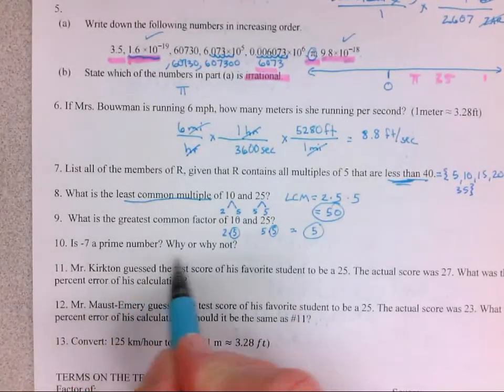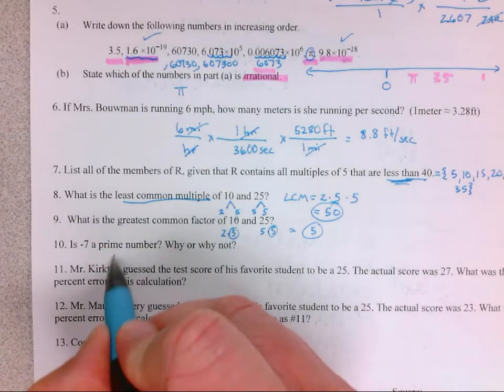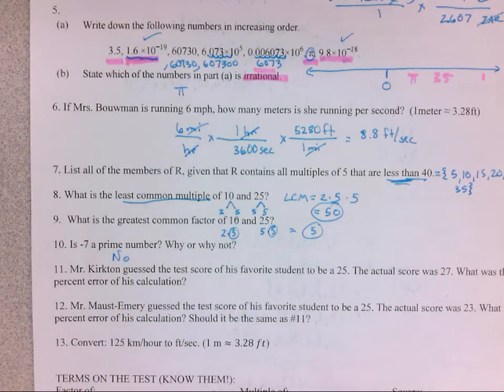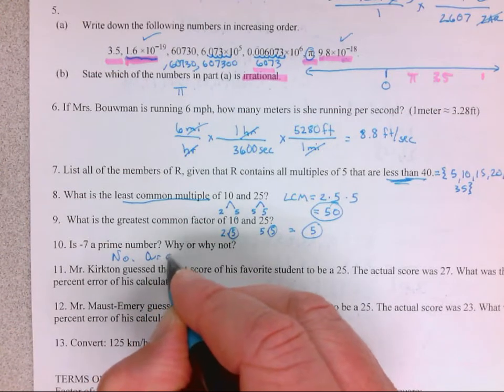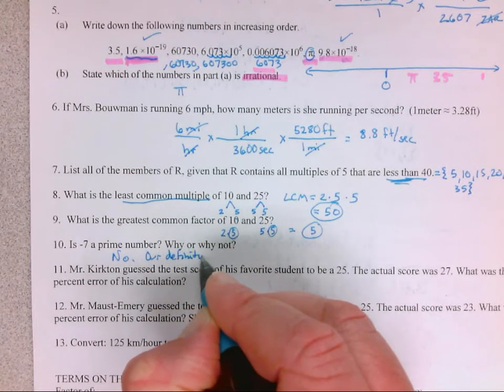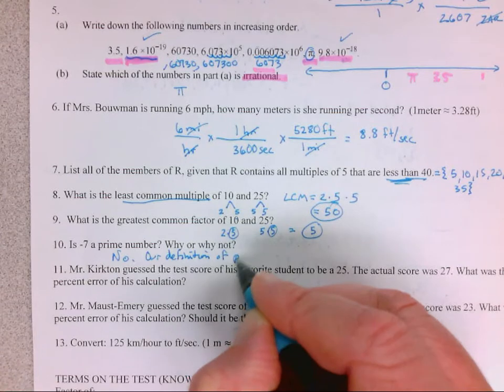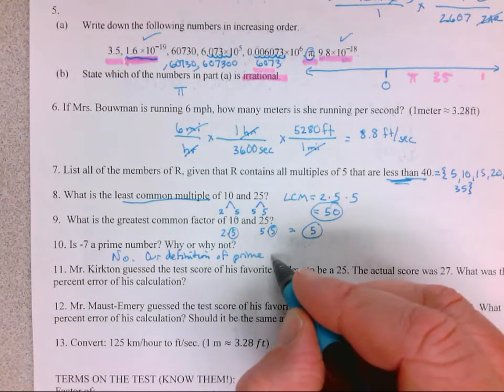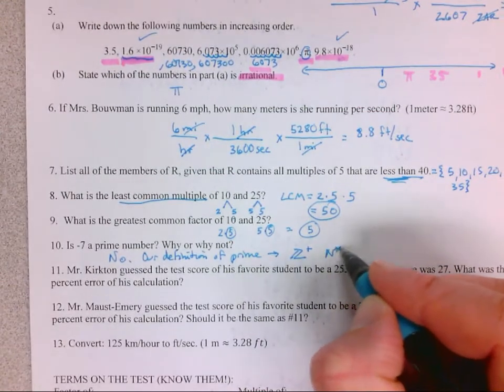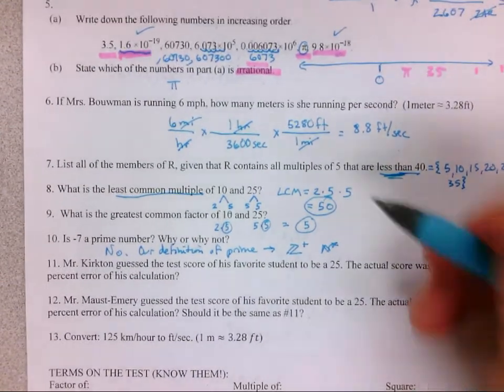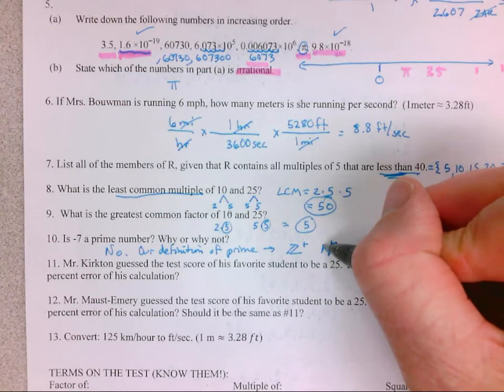Is -7 a prime number? Why or why not? No. No. Our definition of prime... prime numbers. It's just kind of our definition.